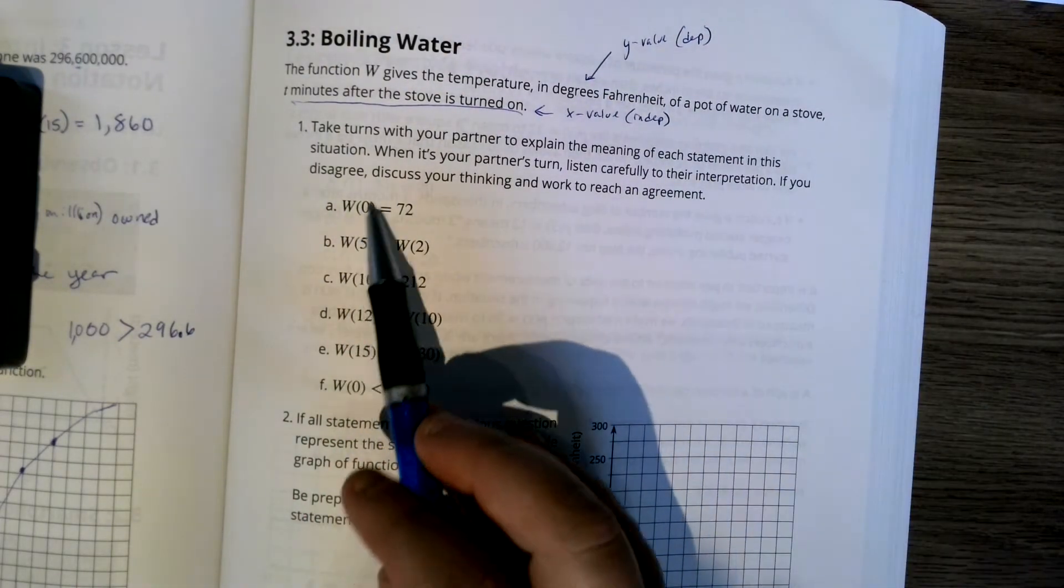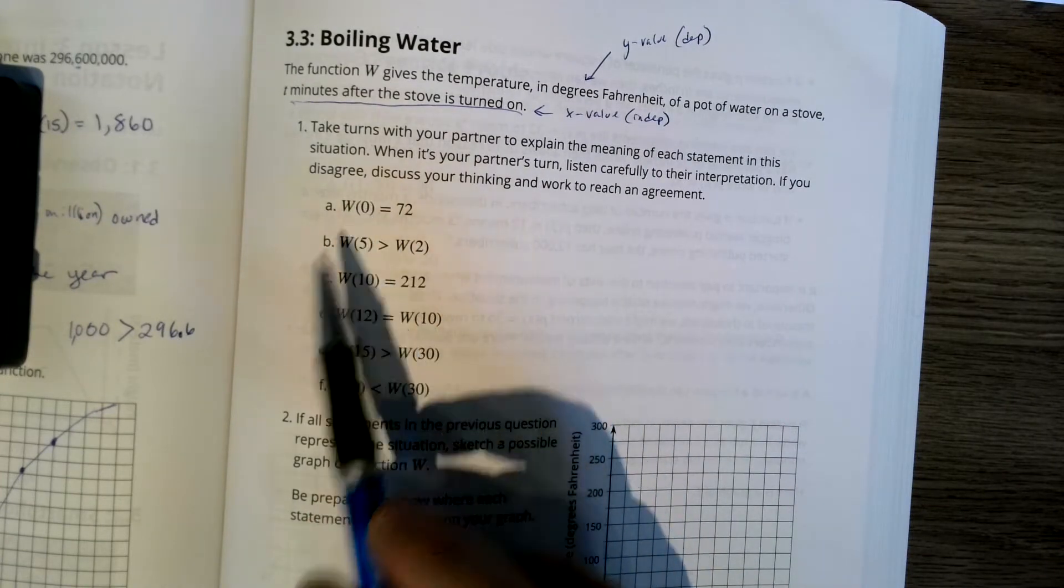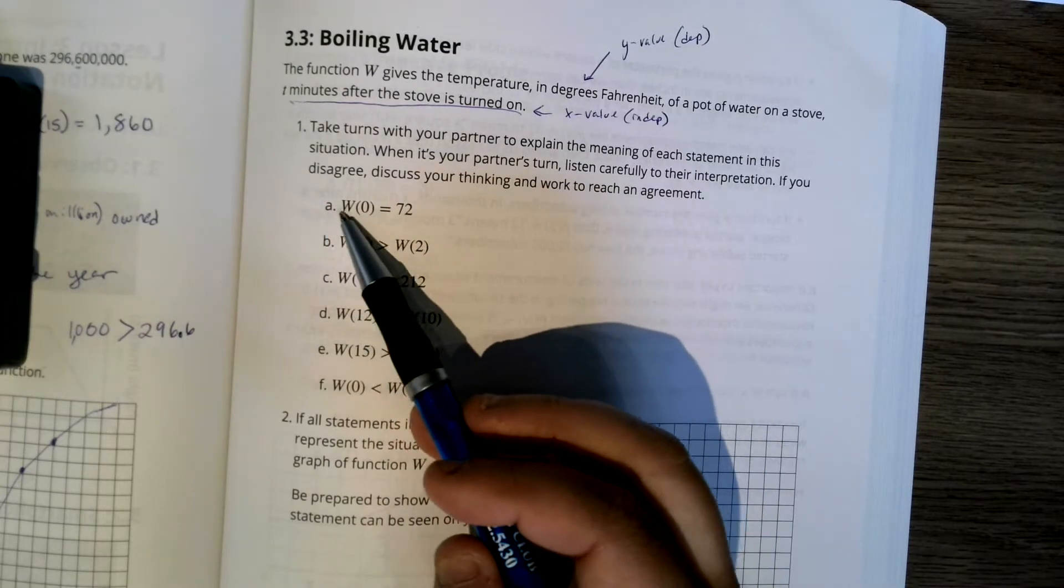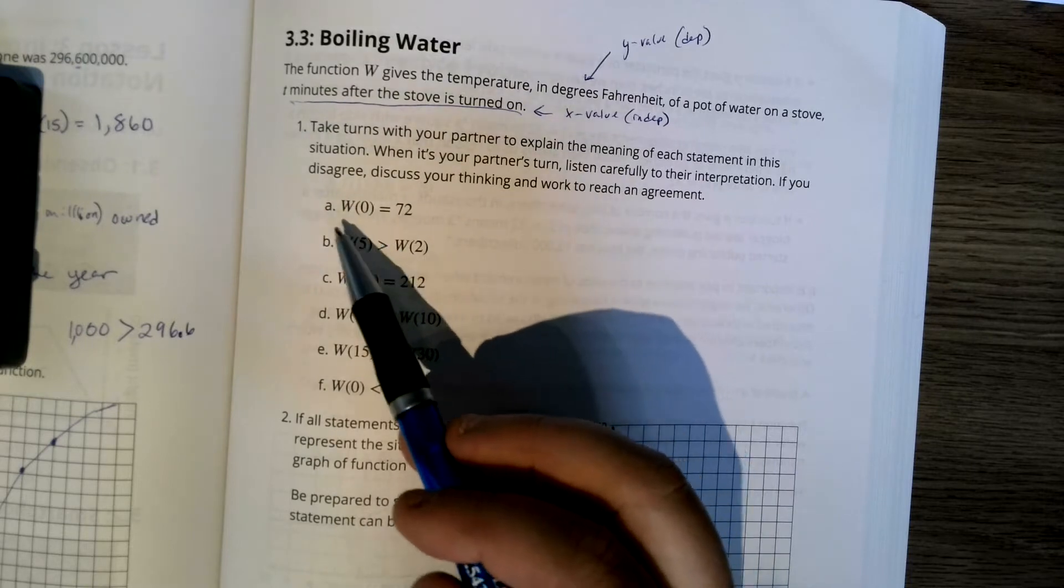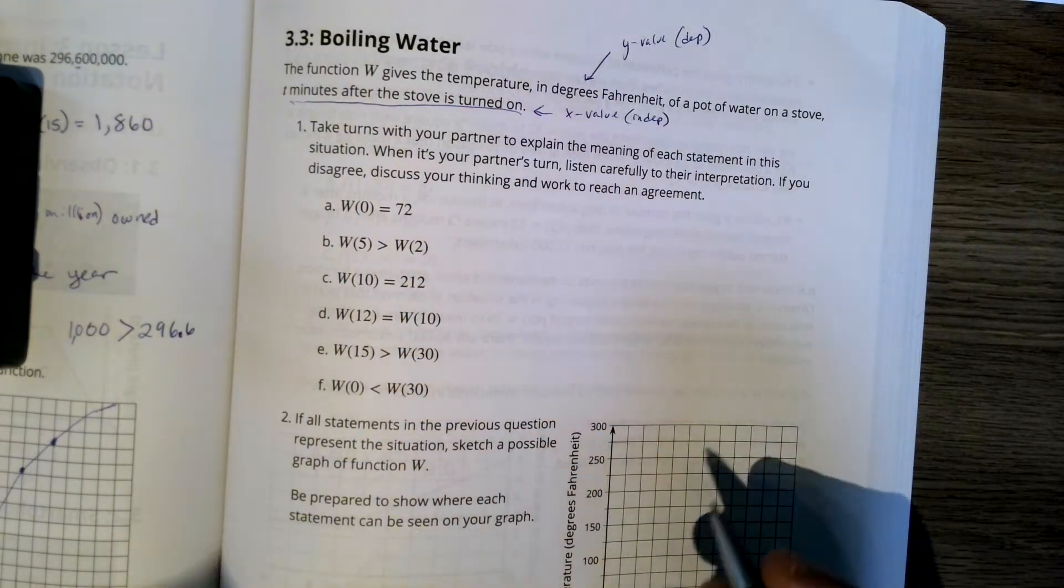Now, somebody in my last class was like W times 0. We're used to the parentheses meaning multiplication, but when we're talking about functions, this is not multiplying W by 0 or W by 5. This is a function, and how we say functions is W of 0 equals 72.